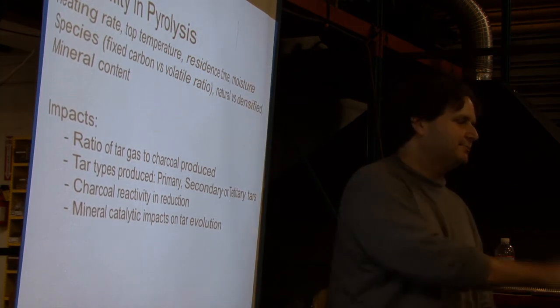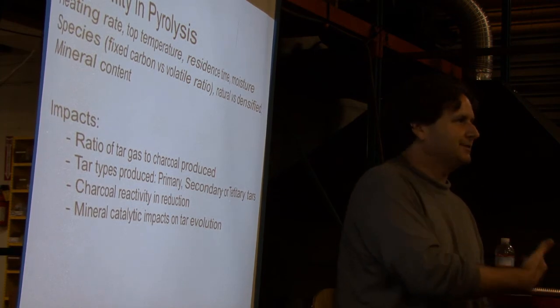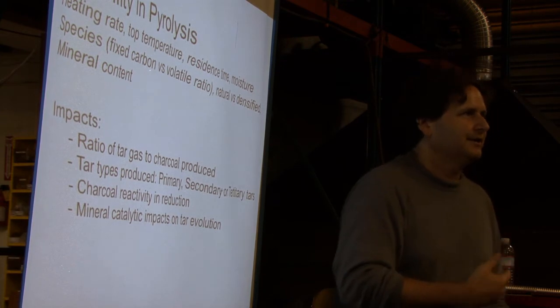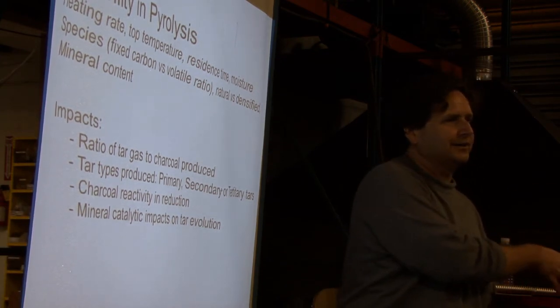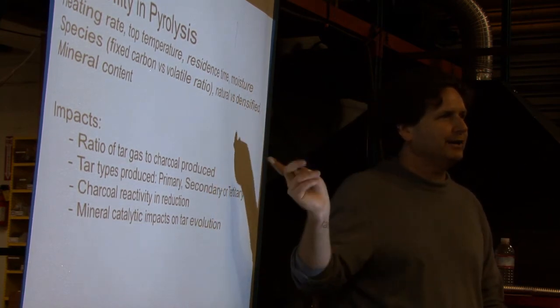Those tar types are then much more difficult to crack downstream. So if we're running a biomass gasifier and we have this primary problem with cracking, one of the main ways to fix it is to not fix the hearth or try to fix it in the hearth with better geometry, but to alter pyrolysis so you don't make these tar types.